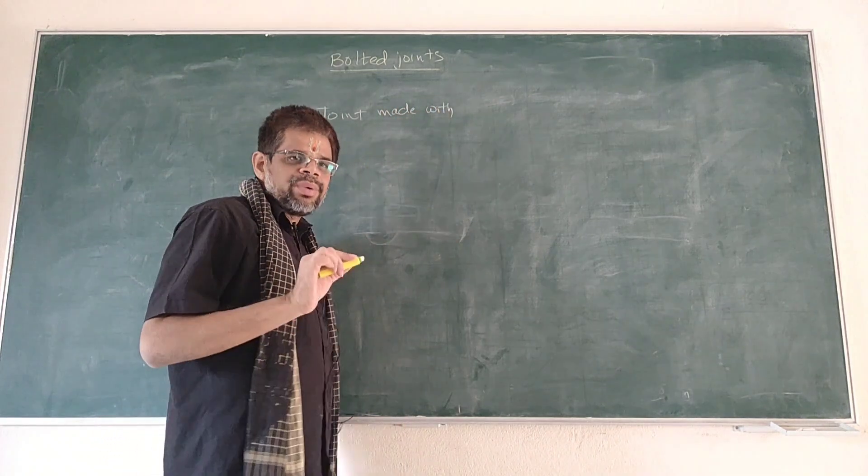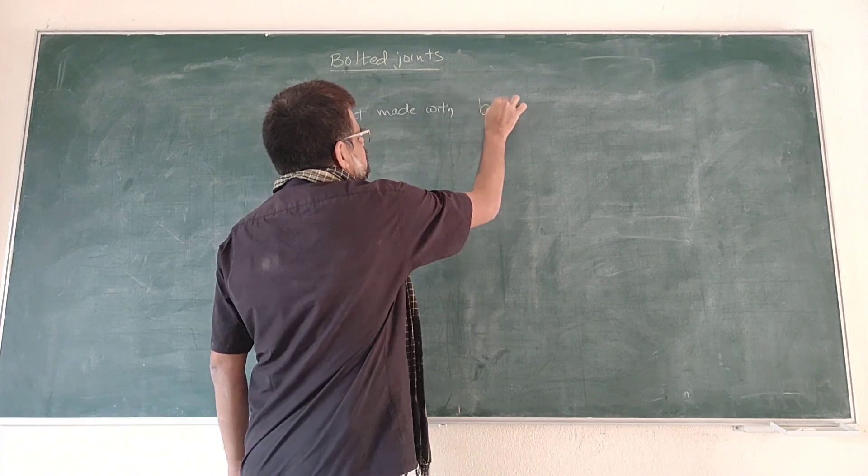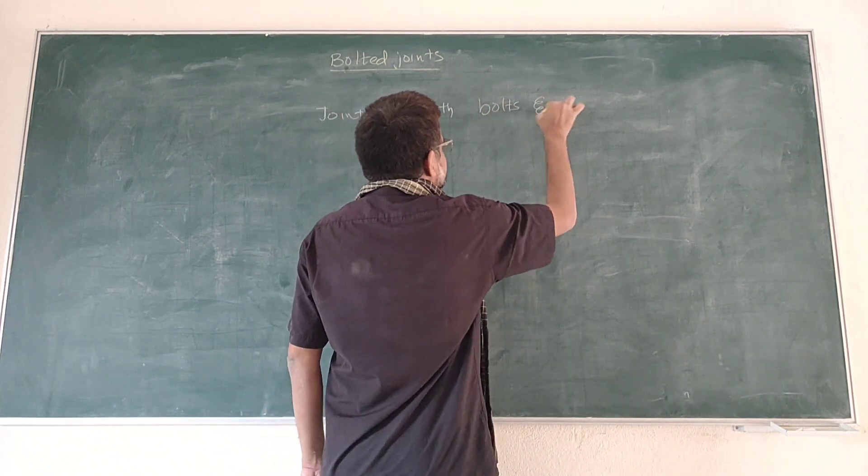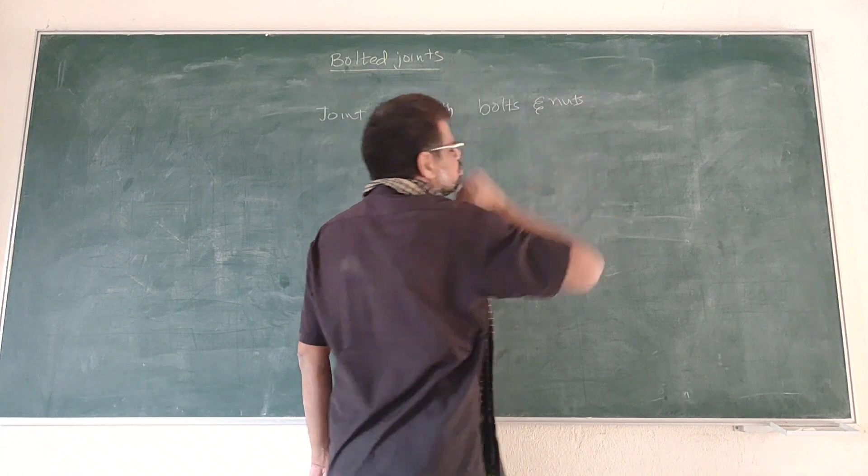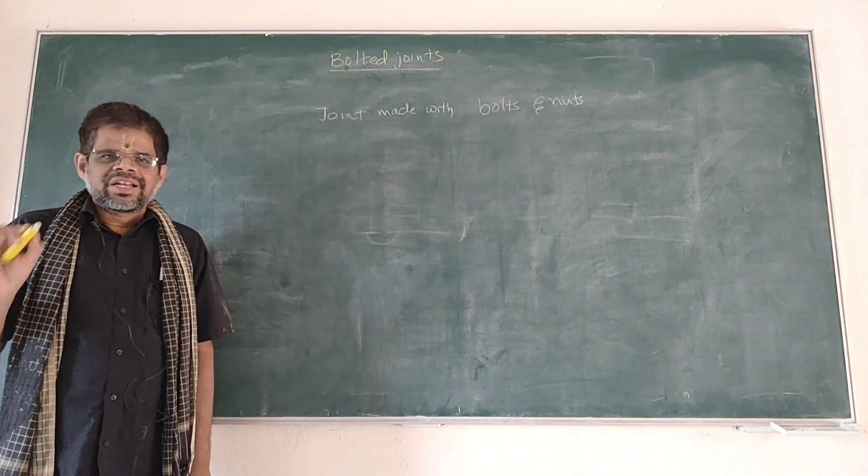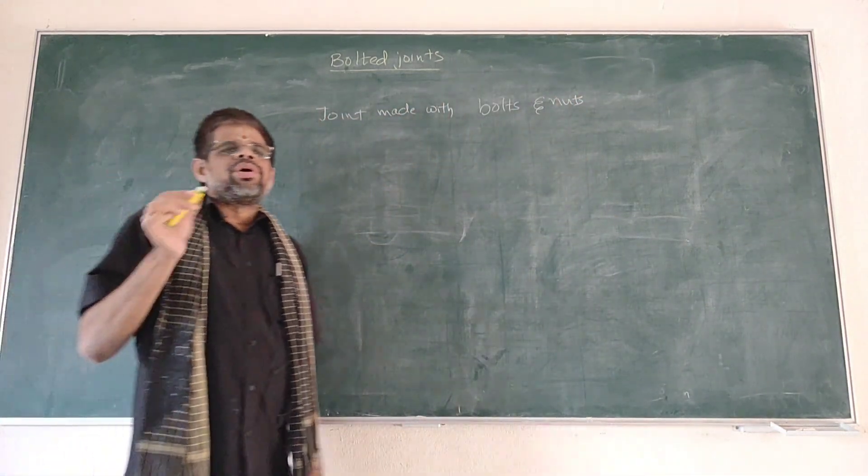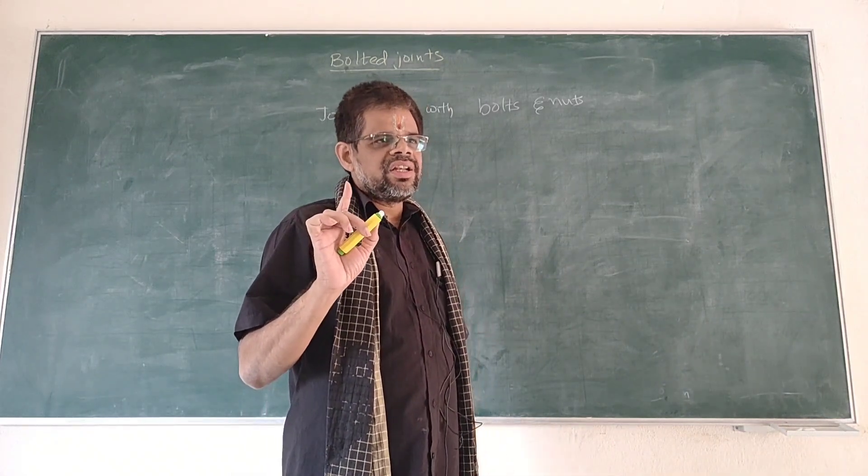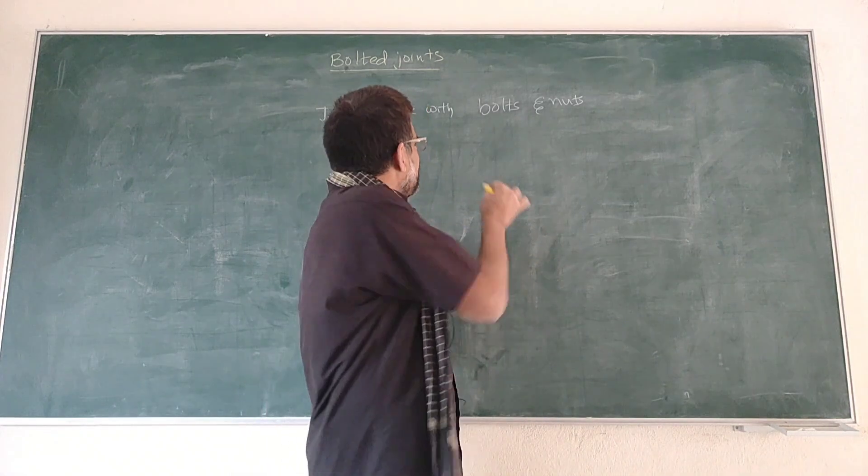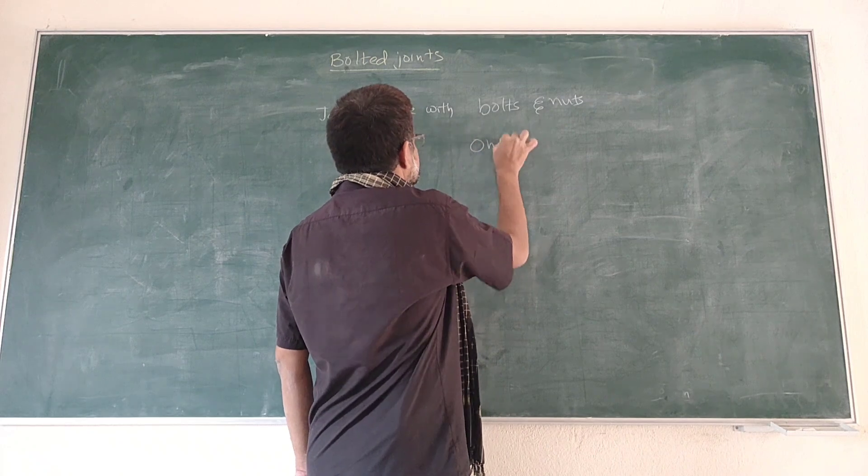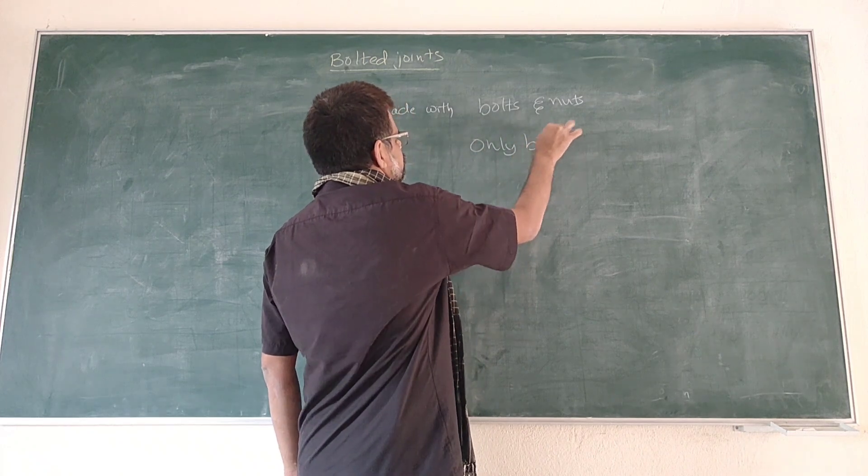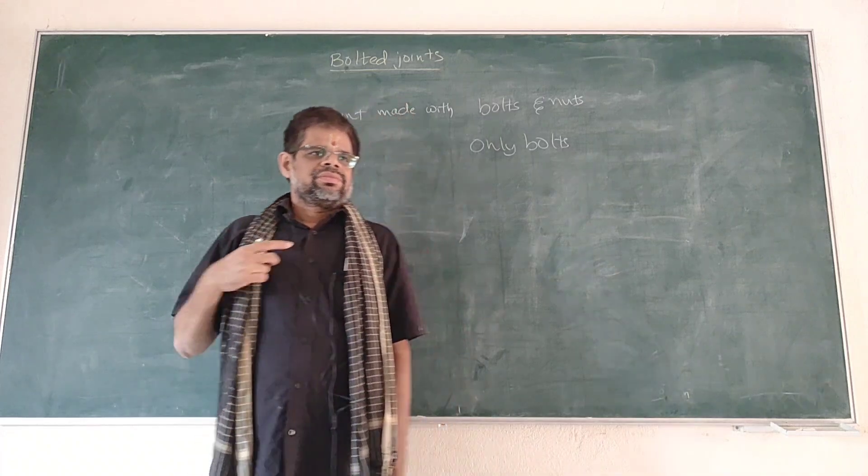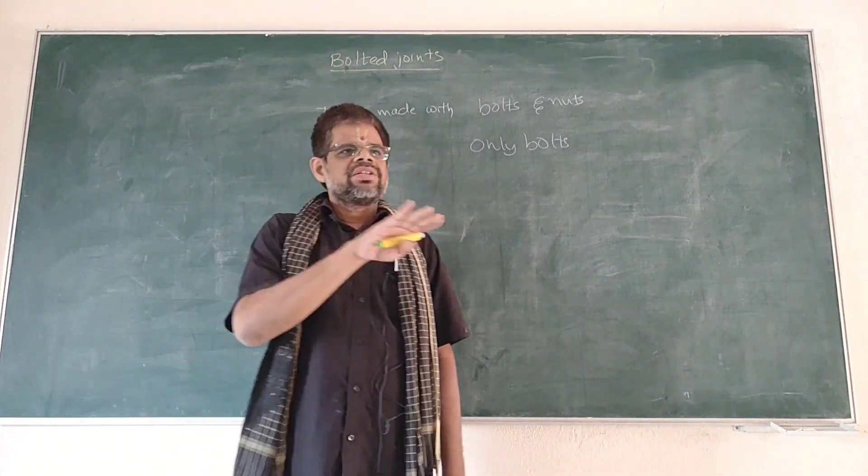Bolts and nuts. Sometimes only bolts may be used, nuts need not be used, or only bolts. Some machines require members to be joined onto the surface of the machines. In such cases, threaded holes are made in the machines and simply bolts can be inserted.